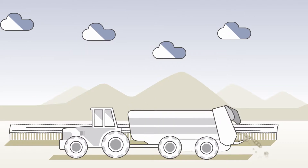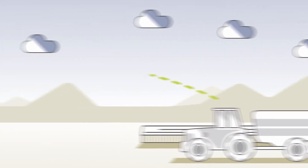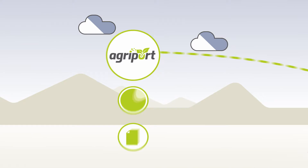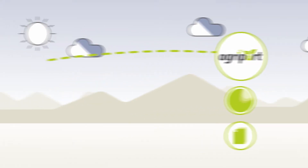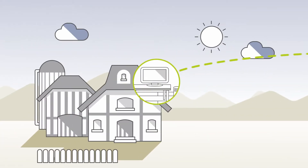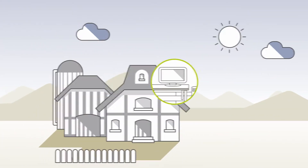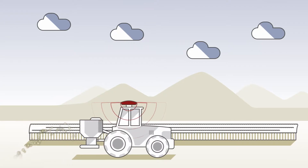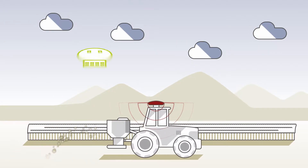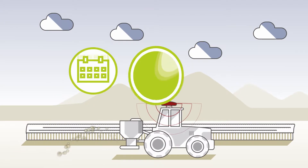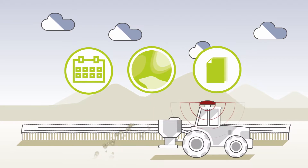As soon as fertilization is done, the measure is automatically recorded and the fertilization plan will be updated. AgriPort also optimizes planning and application of nitrogen fertilization, and makes record keeping easier.